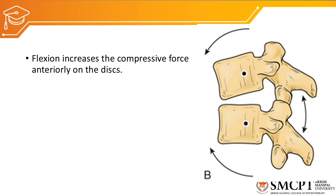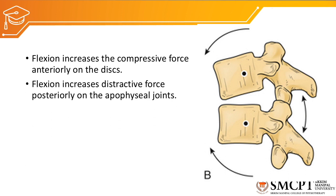More flexion of the thoracic vertebra increases the compressive force anteriorly on the vertebral body and the disc, whereas there will be a destructive force on the posterior structures — the facet joints will get elongated and separate from each other, and the spinous processes will move apart from each other. But anteriorly there will be compressive force on the vertebral body and the disc.